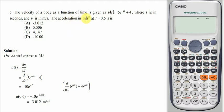And the acceleration in meters per second squared at the point t equals to 0.6 seconds. Now we have to find out the acceleration when the time t equals to 0.6 in seconds.